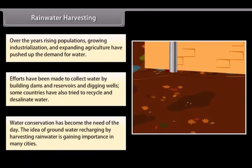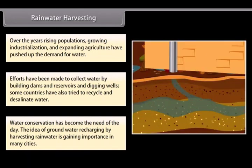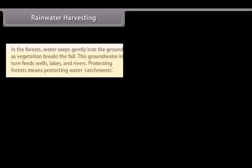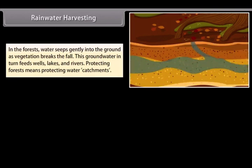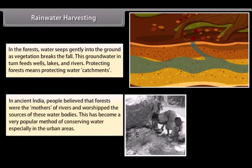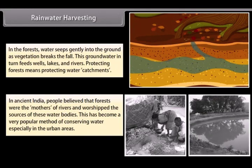In forests, water seeps gently into the ground as vegetation breaks the fall. This groundwater in turn feeds wells, lakes, and rivers, so protecting forests means protecting water catchments. In ancient India, people believed that forests were the mothers of rivers and worshipped the sources of these water bodies. Rainwater harvesting has become a very popular method of conserving water, especially in urban areas.